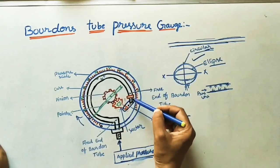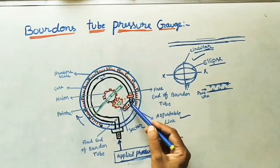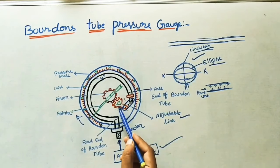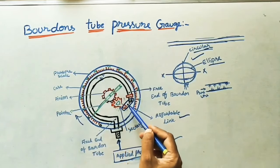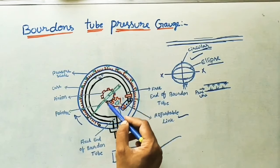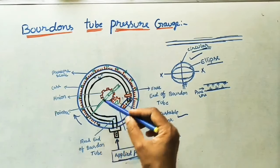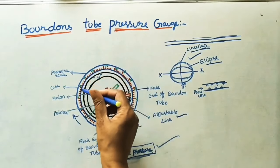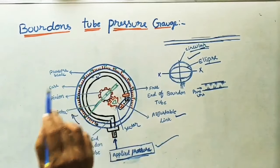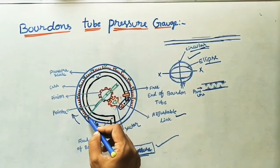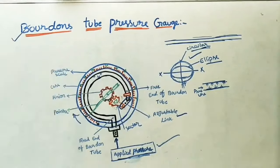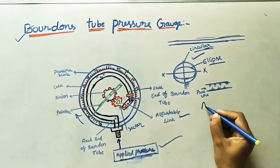Because of this deflection from elliptical to circular form, the adjustable link also deflects. This drags the adjustable link and the sector, which rotates the pinion. The pinion rotation causes the shaft to rotate, which moves the pointer over the circular scale. The pointer reading — for example 5, 10, or 15 bars — gives the value of the applied pressure. This is the complete working process of the Bourdon tube pressure gauge.